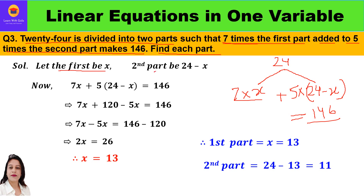Let the first part be x and the second part be 24 minus x. We can say the sum of seven times the first part and five times the second part equals 146: when 7 times the first part is added to 5 times the second part, the result is 146.